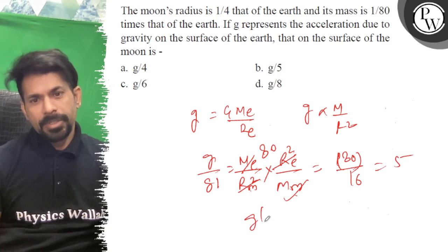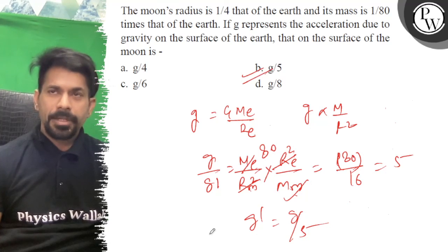This will be 5, so g over g dash equals 5. Option B is correct.